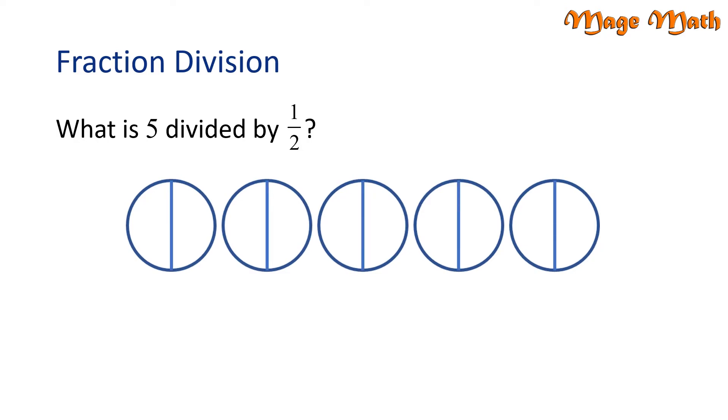Now, we need to count how many 1 half pieces are in the entire model. There are 10 1 half pieces in 5. So 5 divided by 1 half is 10.